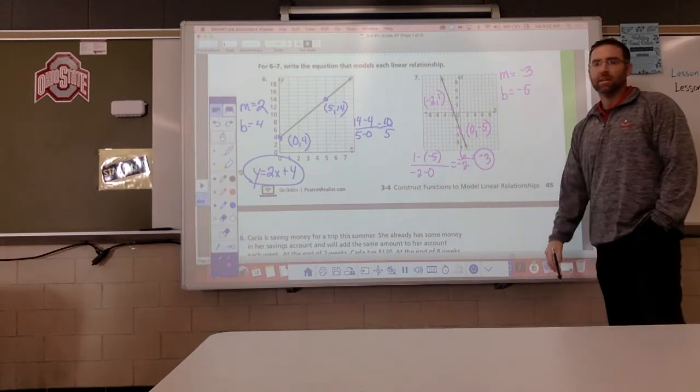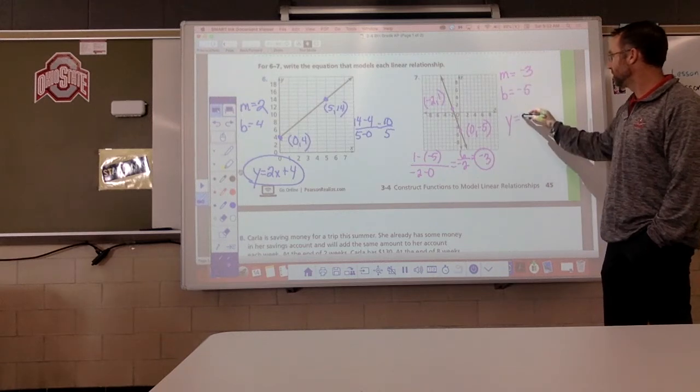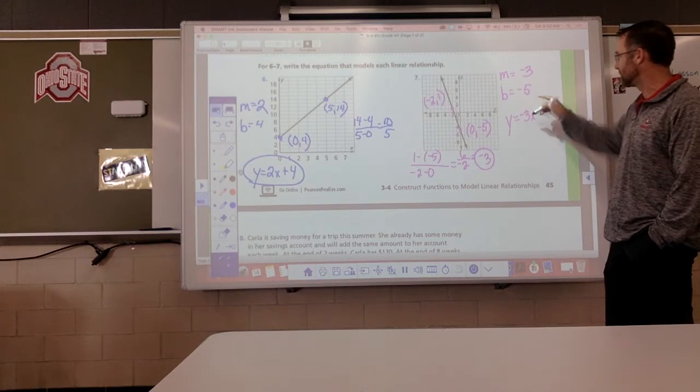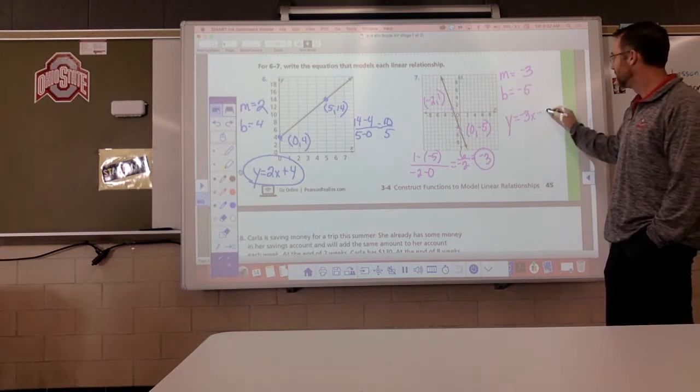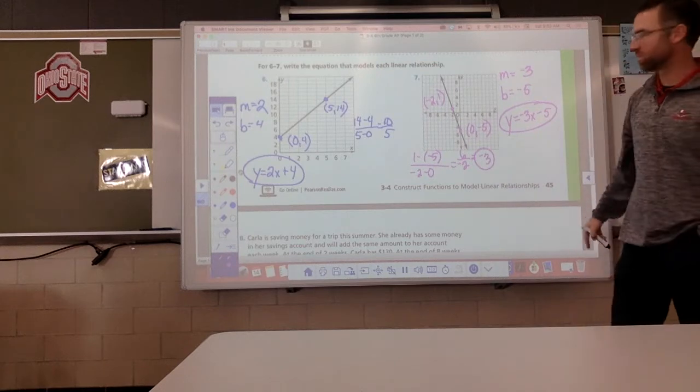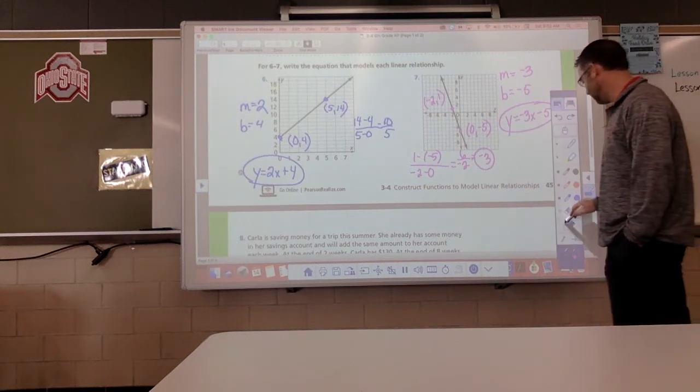So, put it in the function. y equals slope negative 3x plus, well, let's not do plus. Let's just do minus 5. We could have done plus and negative 5, but let's just subtract 5. Okay? All right. Moving on.